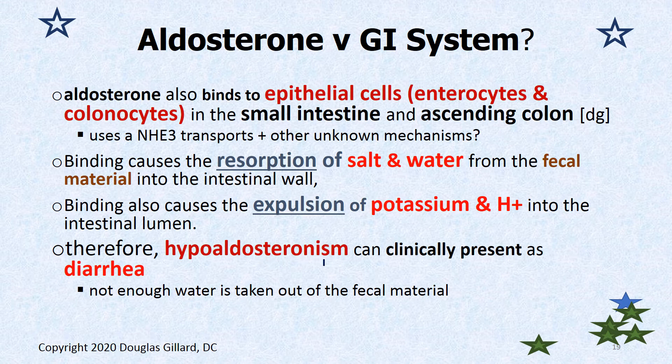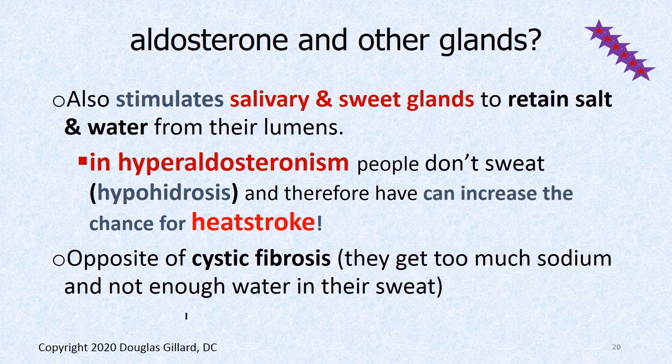Therefore, in hypoaldosteronism — if you don't have enough aldosterone — one of the signs is diarrhea. You also get polyuria from the kidneys because you're not reabsorbing salt and water. Aldosterone also stimulates the salivary glands and sweat glands to retain salt and water from their lumens. In hyperaldosteronism — too much retention — you don't make sweat very well, developing hypohidrosis (lack of sweating). Near the equator, this significantly increases the risk of heat stroke.